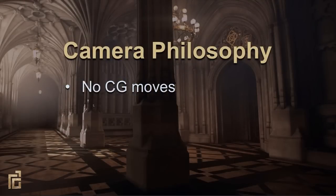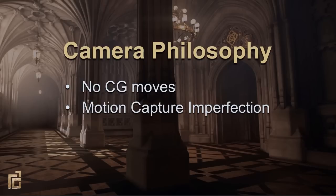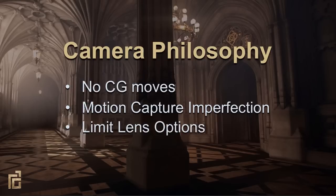So our first rule was to have no impossible camera moves. If you couldn't make the shot with a real camera, we would avoid it. And just like our characters, we wanted imperfections in our camera motion, which meant applying mocap to all of our cameras, even the in-game ones. We would also only use a limited set of fixed lenses. Films don't have an infinite selection of focal length choices, so we decided that we didn't either. This helped define a style for shot selection for the game as a whole, but we could also apply realistic parameters to all those lenses.